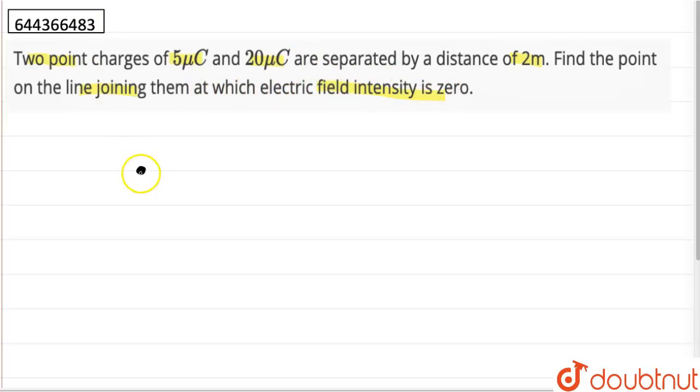So we have two charges 5 micro coulomb and 20 micro coulomb. Let these points be A and B and the distance between them is given, the distance is 2 meters.